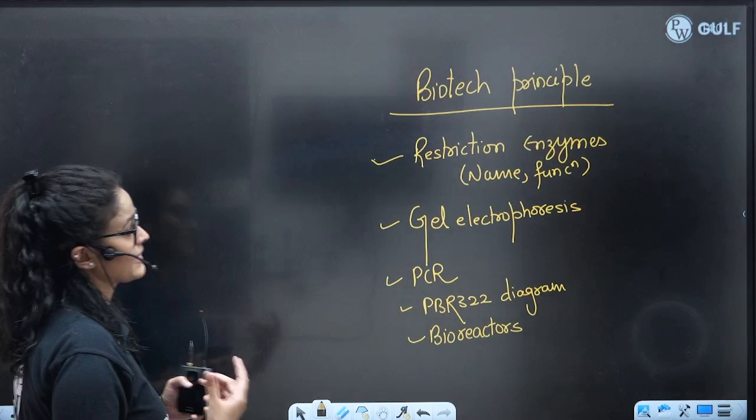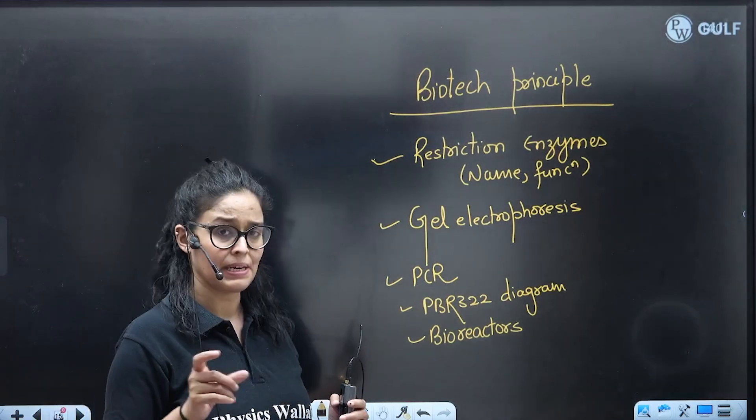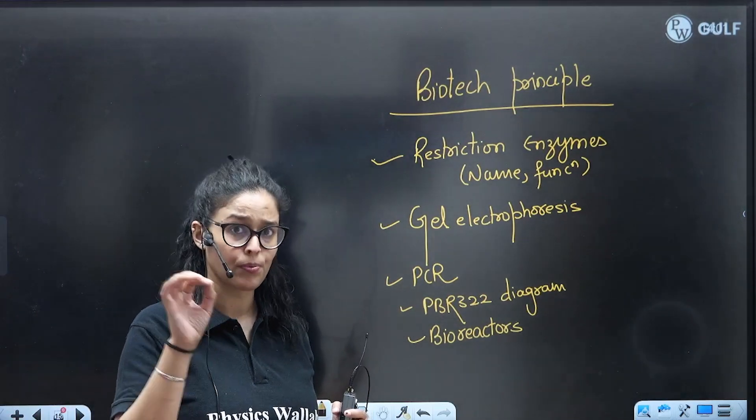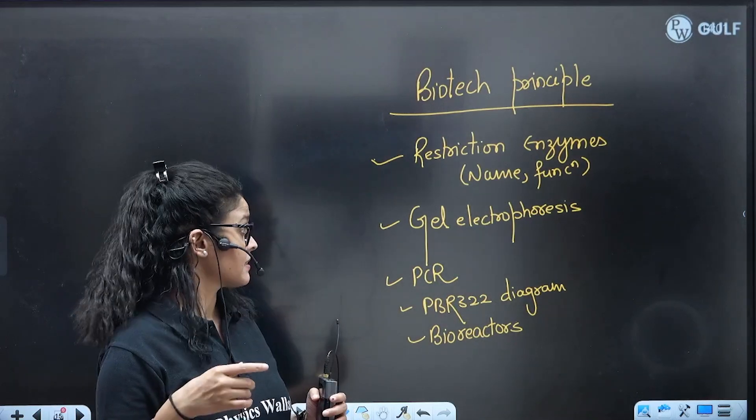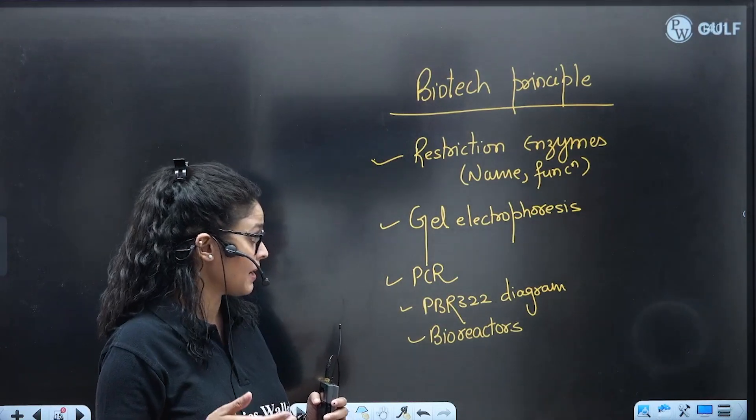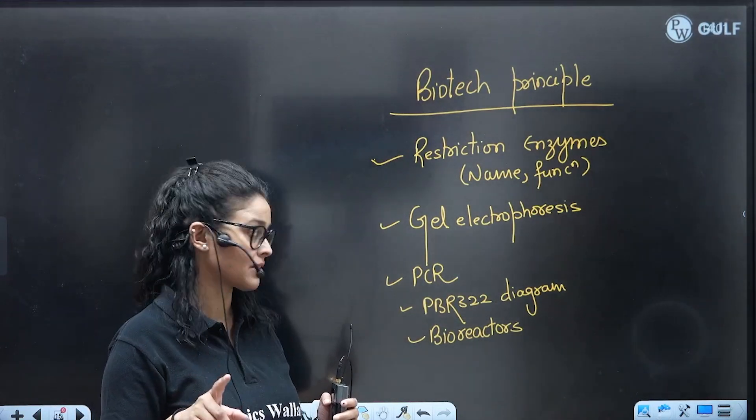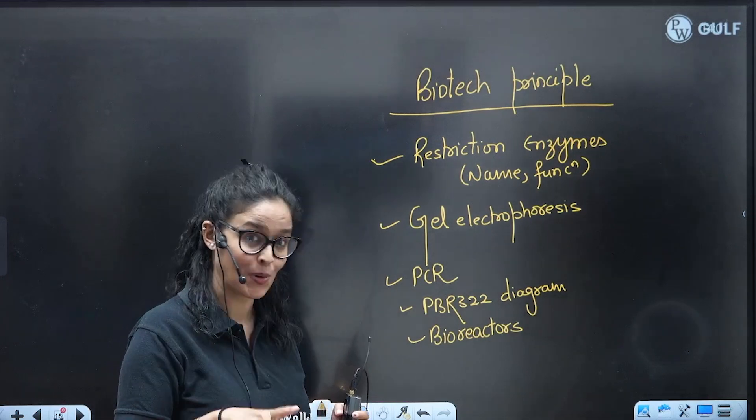Next is Biotechnology Principles: restriction enzymes, name, function - they have given EcoR1 in very detail, so you have to practice it. Gel electrophoresis, PCR, pBR322 diagram is important. They ask you to label it, sometimes to draw it.